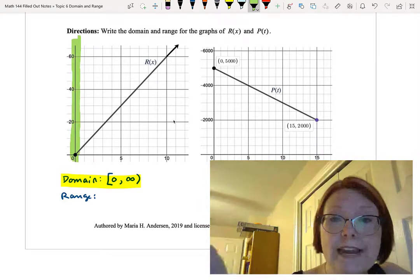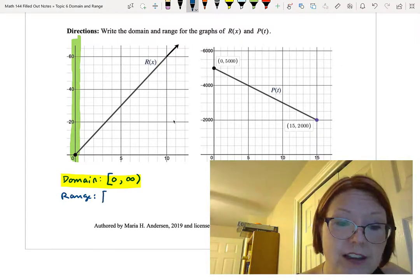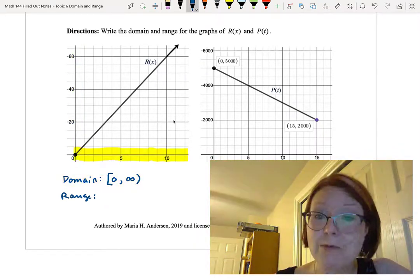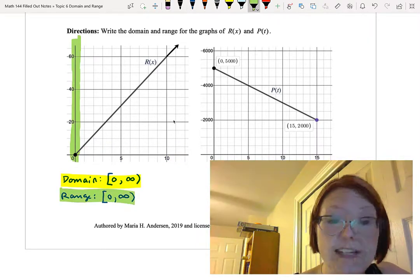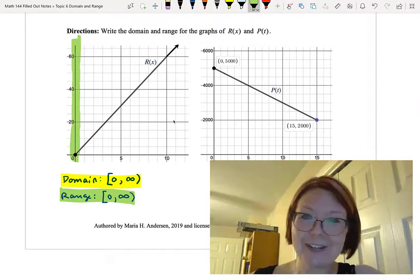So our range, which is the y values, also starts at 0 with a bracket and continues to positive infinity right parenthesis, but now going in the y direction. It's like a number line rotated vertically by 90 degrees.